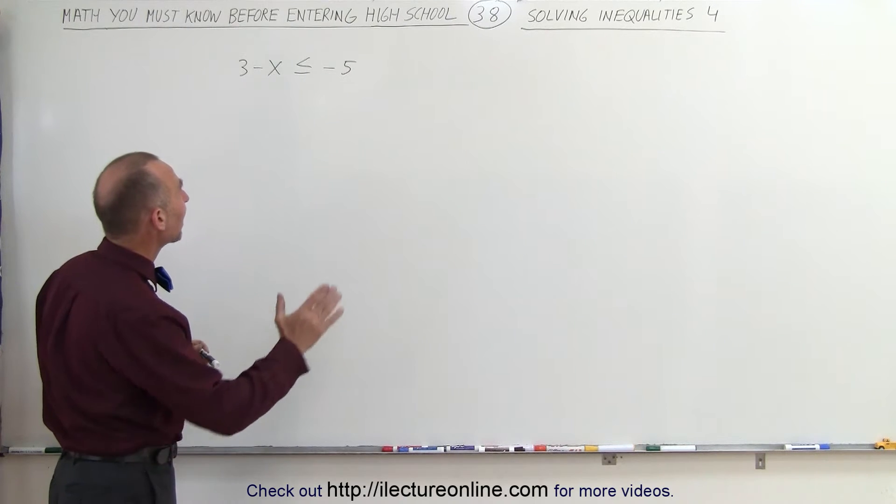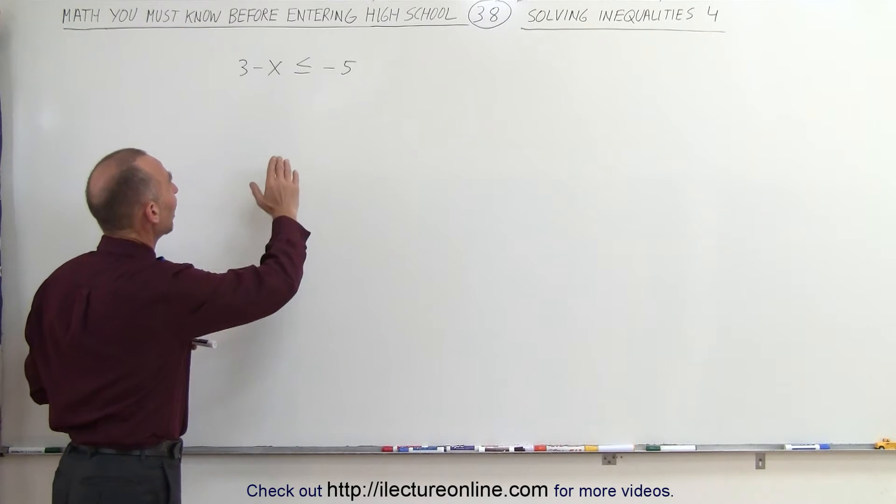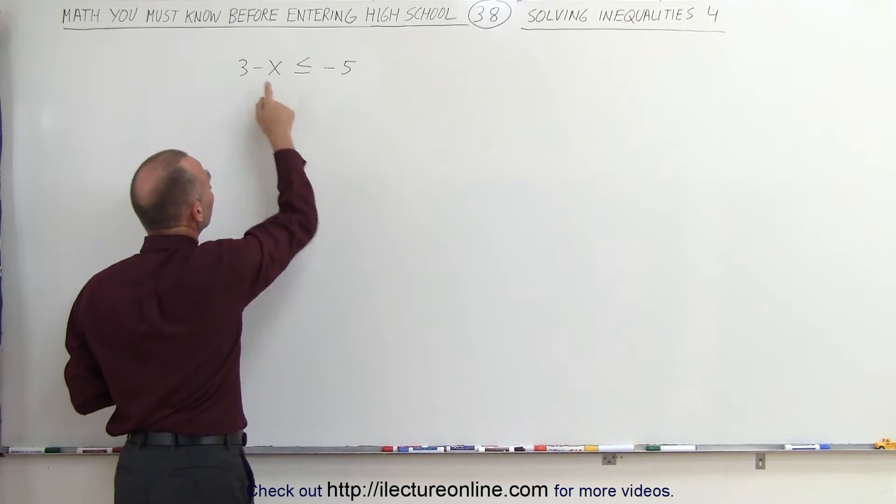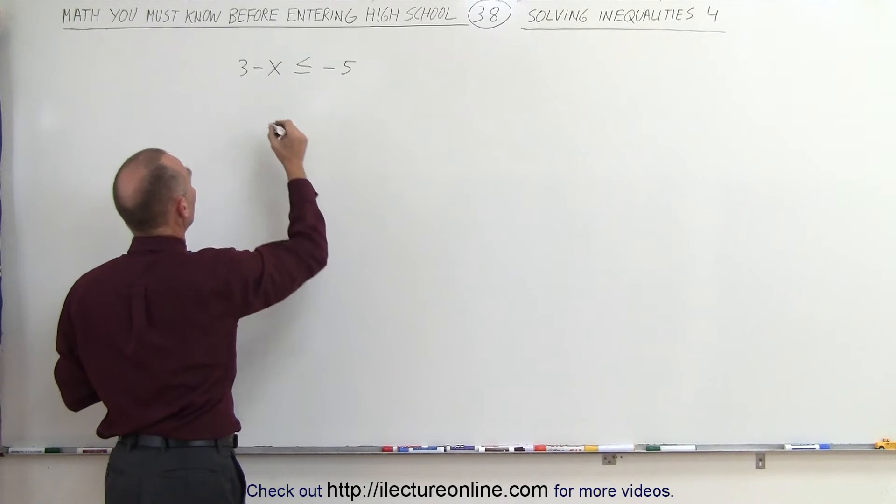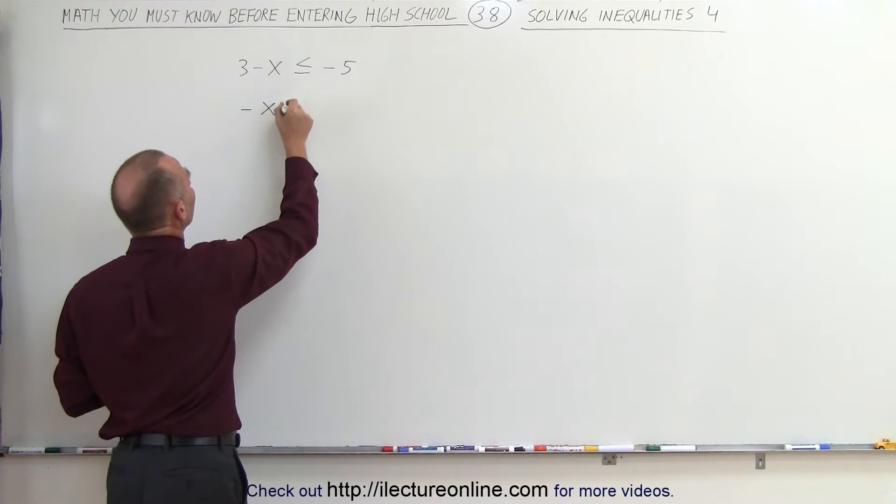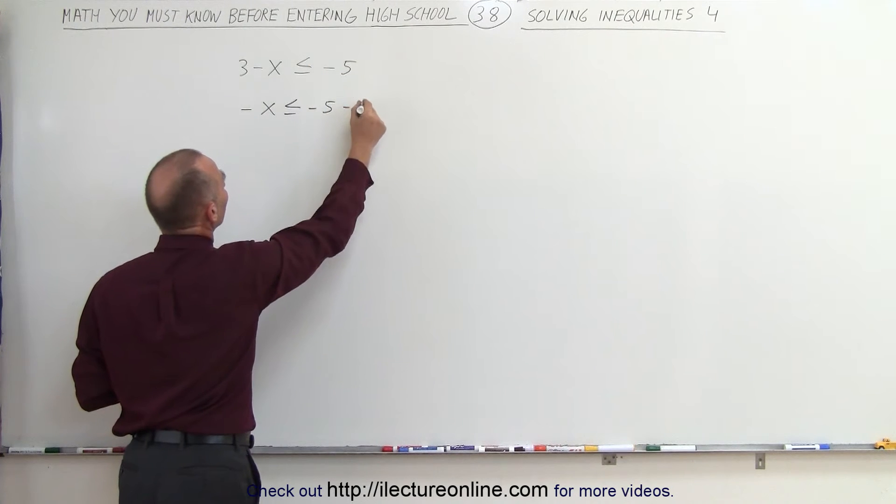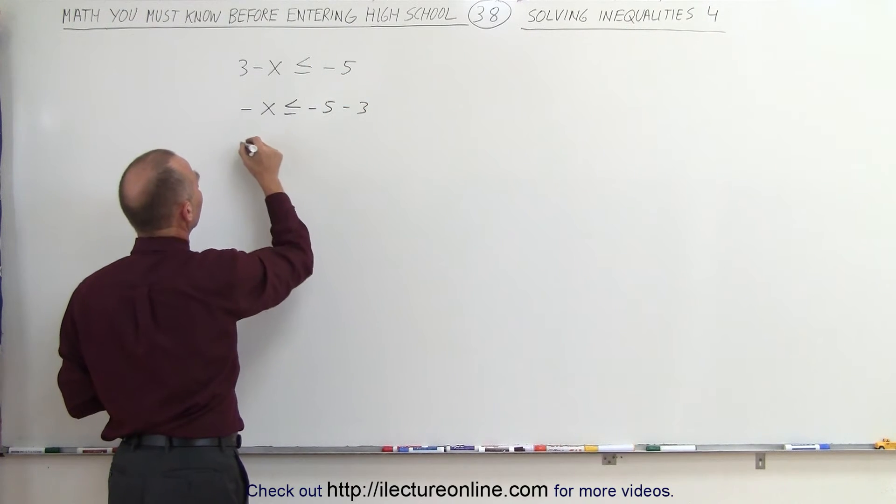We can solve that by isolating x on the left side, so we're going to move the 3 to the other side. When we move the 3 to the other side of the inequality, it does change sign. Just like with equations, we get minus x less than or equal to minus 5, and the 3 that goes to the other side becomes a minus 3. Therefore we get minus x is less than or equal to minus 8.